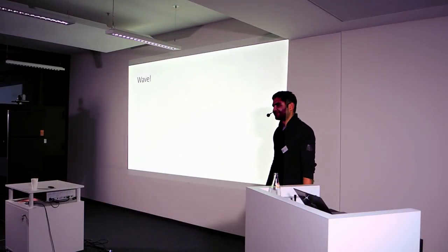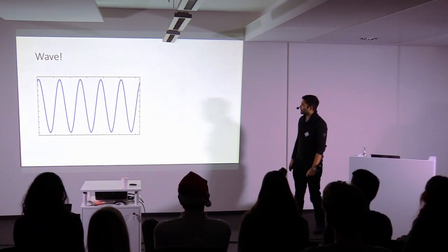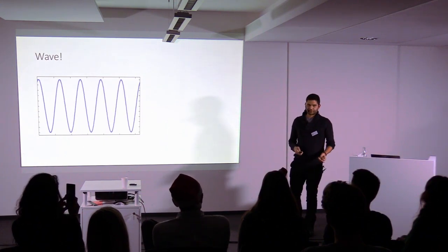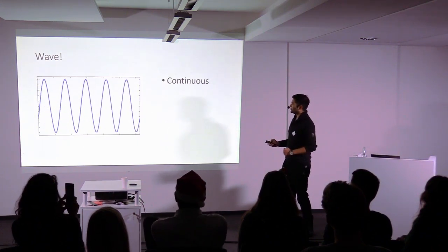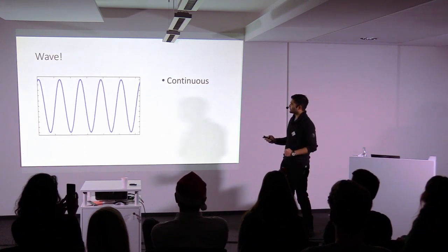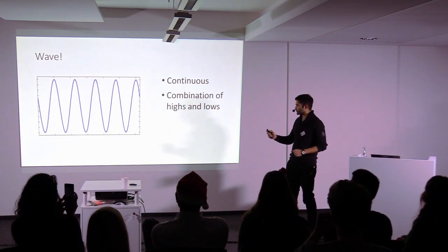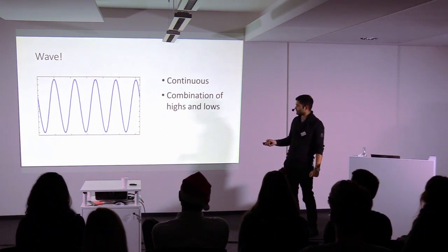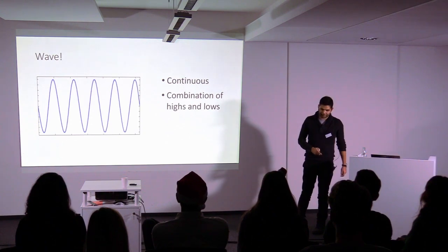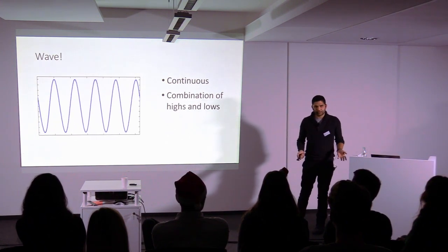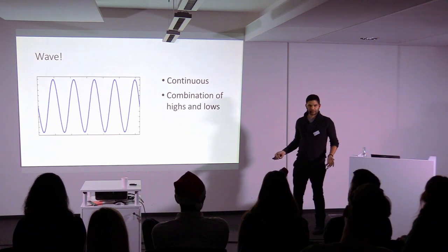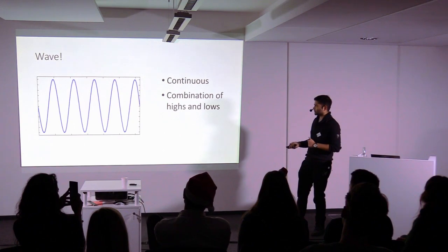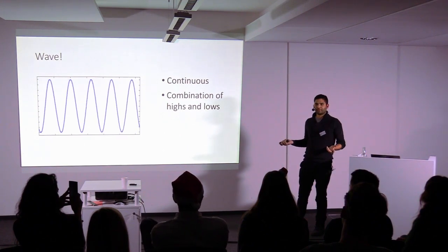Then we move on to wave. Wave on the other hand is continuous. There's no start or end depending on the source. So we have that set. It's a combination of highs and lows. What do you mean by highs and lows? These things go up and down and up and down. The up part is high and the down part is down.